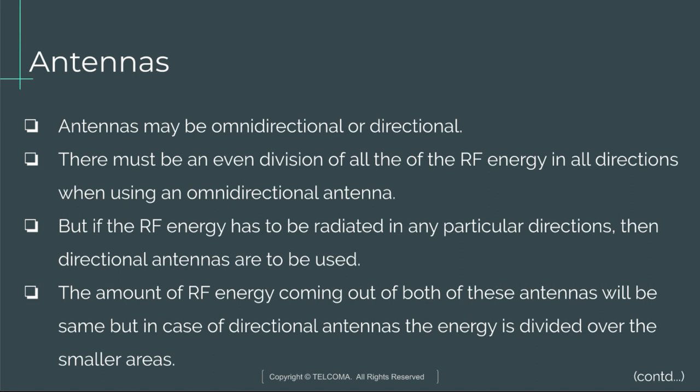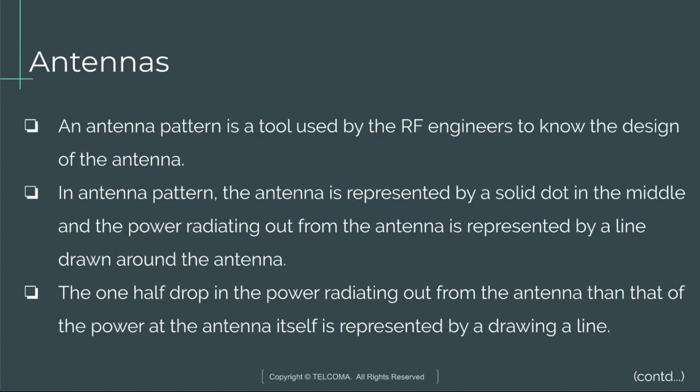Antennas may be omnidirectional or directional. When using an omnidirectional antenna, the RF energy must be evenly divided in all directions. If the RF energy has to be radiated in a particular direction, then directional antennas are used. The total amount of RF energy coming out of both types will be the same.